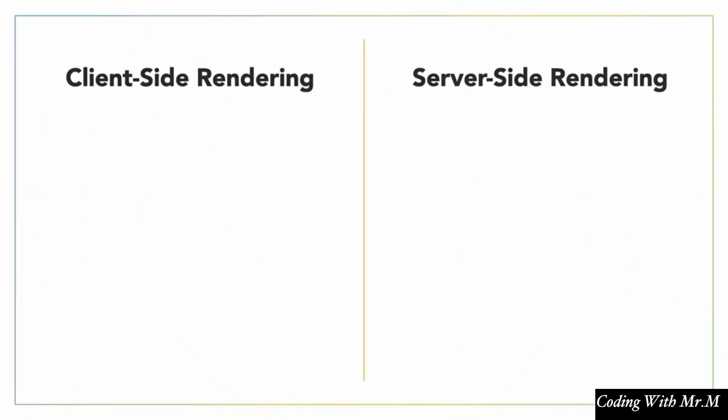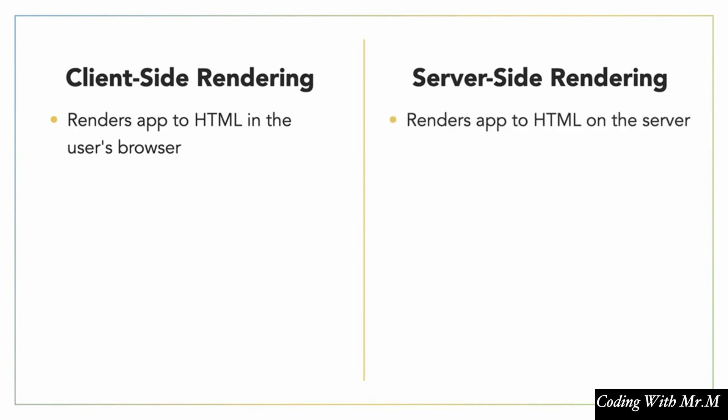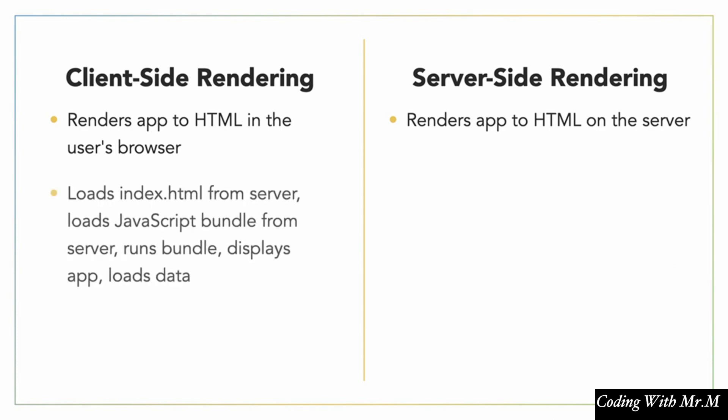Let's talk about some comparisons between client-side rendering and server-side rendering. Client-side rendering renders the app to HTML in the user's browser — the user's browser is essentially doing all the work. In server-side rendering, the server does most of the work and then simply sends that finished HTML document to the client. With client-side rendering, the process involves multiple steps: first load the index.html file, then that tells the browser to load the JS bundle, then the browser runs that bundle, rendering all elements, and then it still has to load the data from the server — so we've got at least three round trips.